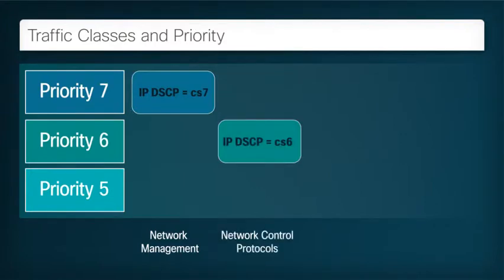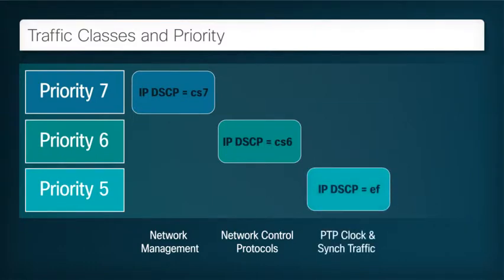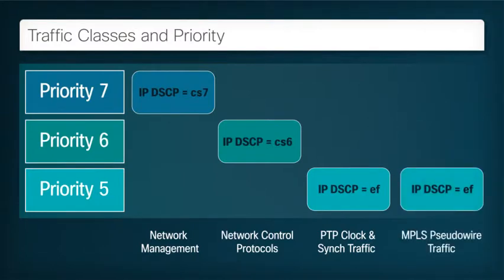The second category includes the network control layer, such as IP routing protocols. For network and routing stability, we must be sure that this traffic is forwarded whenever possible. Next, there is bidirectional PTP traffic between the PTP master and slave, carrying the clocking information. This traffic is very sensitive to latency and jitter, so it must be allocated to a low latency priority queue. The last class of special traffic in our example is pseudowire traffic, encapsulated in MPLS and usually marked with an experimental tag of 5. This traffic is moderately sensitive to delay and jitter, so we must also allocate it to the priority queue.